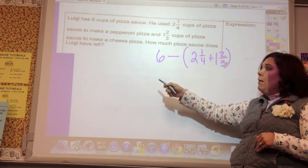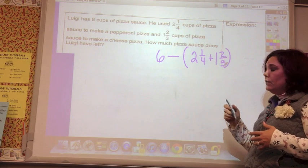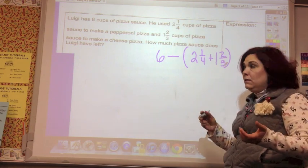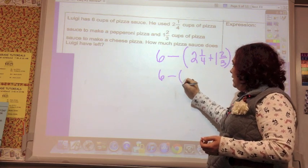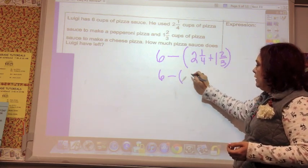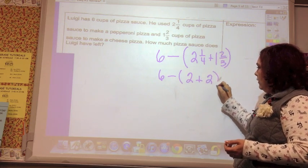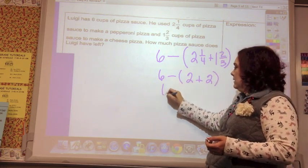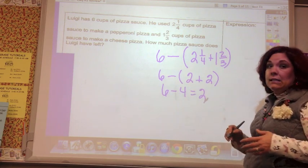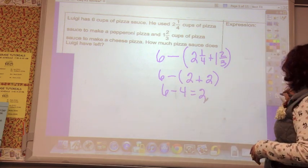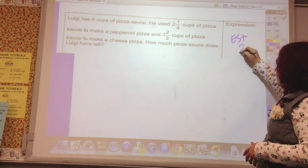So order of operations tells me to do what first? I have to do what's in parentheses. So let's go ahead and estimate this so that it's easy. So six minus, and two and one-fourth would go to two, and one and two-thirds would go to two. So I would have six minus four equals two. That's my estimate, so that's what I want to see if I'm going to get.